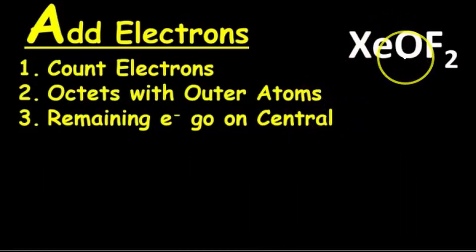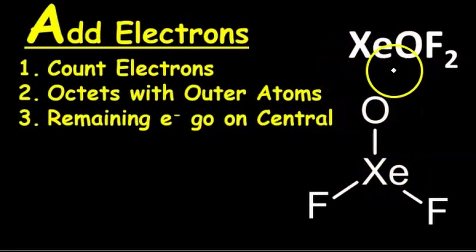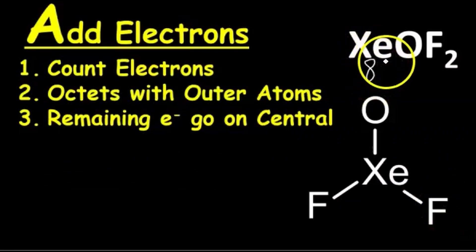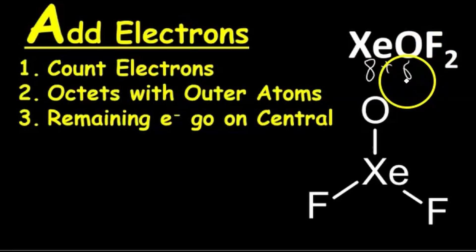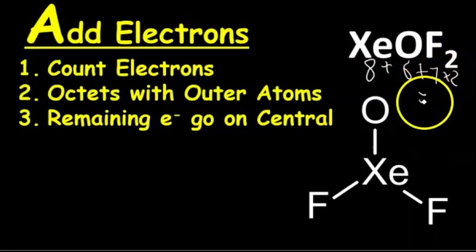Now for the xenon, oxygen, and fluorine example with xenon in the center. We need to count how many electrons to add. On the periodic table, xenon has eight valence electrons — start from the left, skip the transition metals, count to eight. Oxygen has six as before. Fluorine has seven — start from the left: one, two, three, four, five, six, seven. And there are two fluorines, so times two. Adding it all up gives 28 electrons to add.